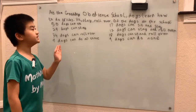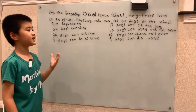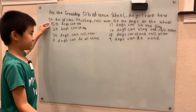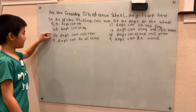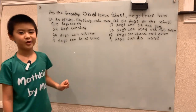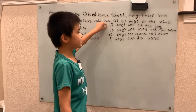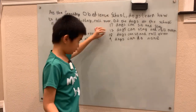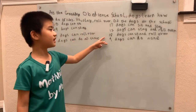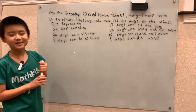At the Good Dog Obedience School, dogs learn how to do tricks: sit, stay, and roll over. Of the dogs at the school, 50 dogs can sit, 29 dogs can stay, 34 dogs can roll over, and 9 dogs can do all three — those are the super dogs. 17 dogs can sit and stay, 12 dogs can stay and roll over, 18 dogs can sit and roll over, and 9 dogs can do none.